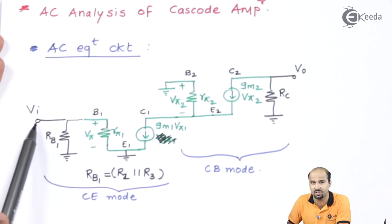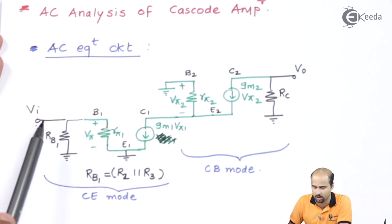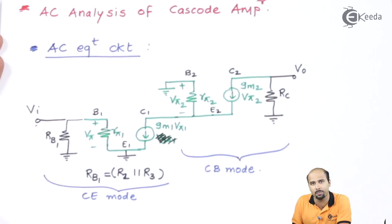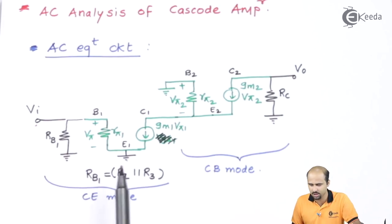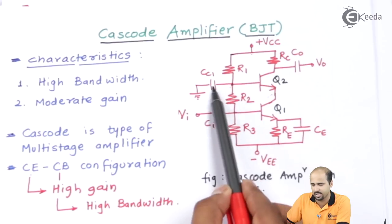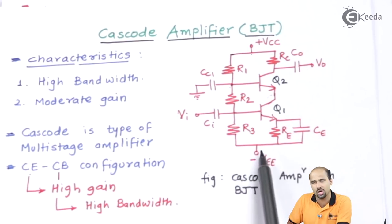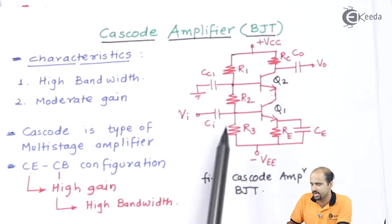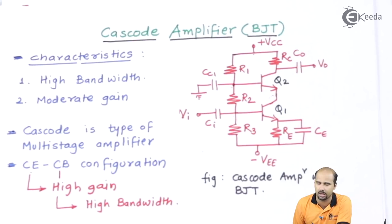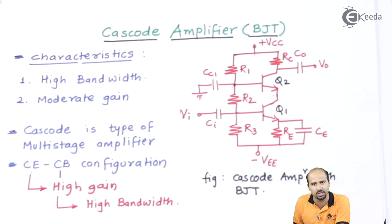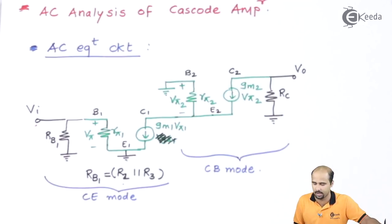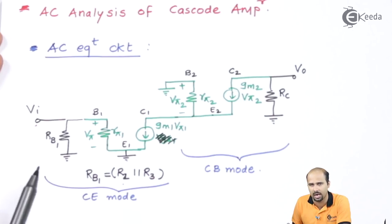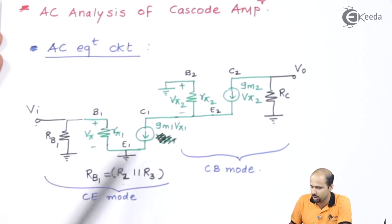I will start from the input, which is given to the CE mode of your cascode configuration. This base resistance comprises R2 in parallel with R3. R2 has one terminal connected to ground and the second terminal connected to the base. R3 also has one terminal connected to the base and another terminal connected to ground — same as the Thevenin voltage divider bias network. So RB1 is equal to R2 parallel R3.